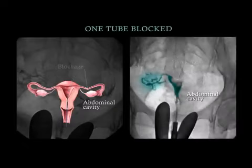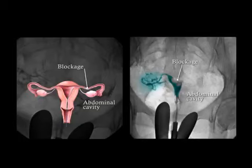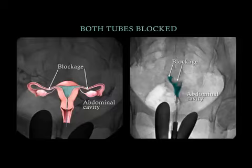If one fallopian tube is blocked, the dye will not spill out into the abdominal cavity on that side of the patient. In some cases, blockage can occur in both fallopian tubes. Notice that the dye will remain within the endometrial cavity.